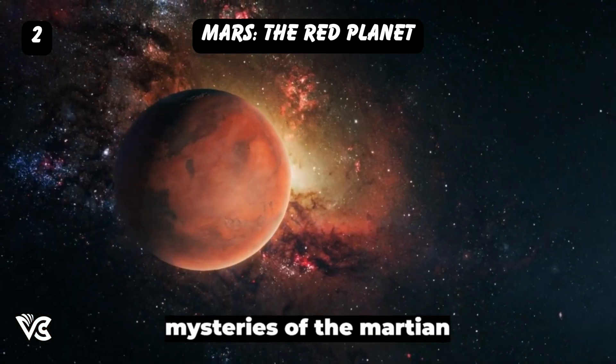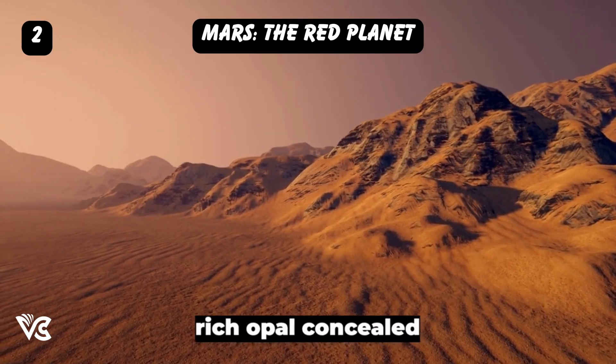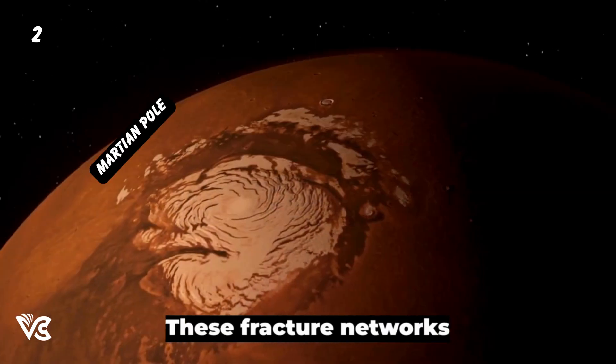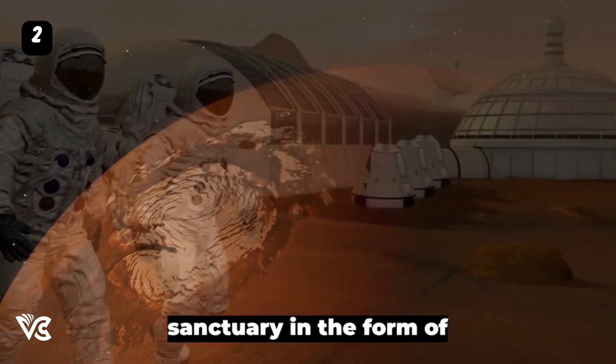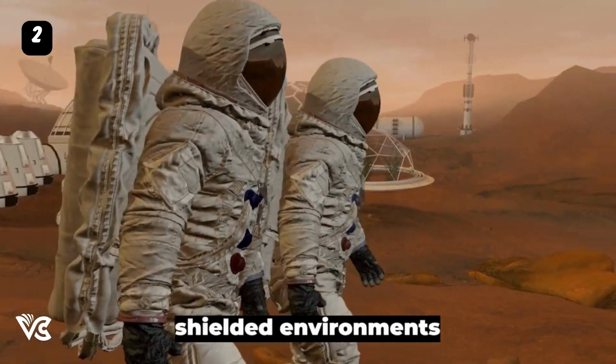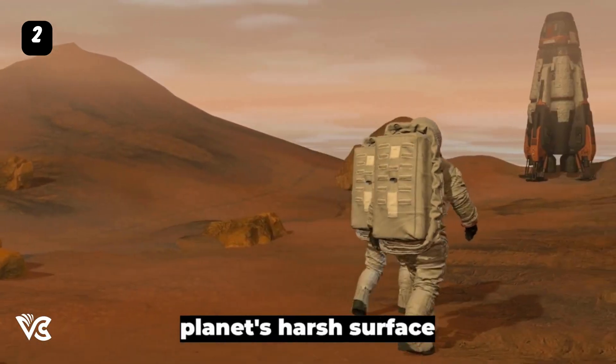has unveiled the hidden mysteries of the Martian landscape, including a precious discovery: water-rich opal concealed within fracture halos. These fracture networks, hidden beneath the Martian surface, provided sanctuary in the form of water-rich and radiation-shielded environments, potentially more habitable than the planet's harsh surface conditions.